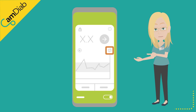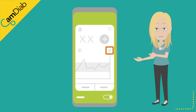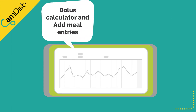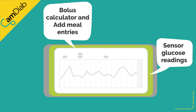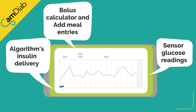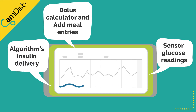By tapping on this icon or turning your phone to landscape, you are able to see a detailed graph. At the top of the graph, you can see carbohydrates and insulin given via the bolus calculator or when carbohydrates are entered via the Add Meal function. The sensor glucose readings are in the middle of the graph. You can see the algorithm's insulin delivery in blue at the bottom of the graph.